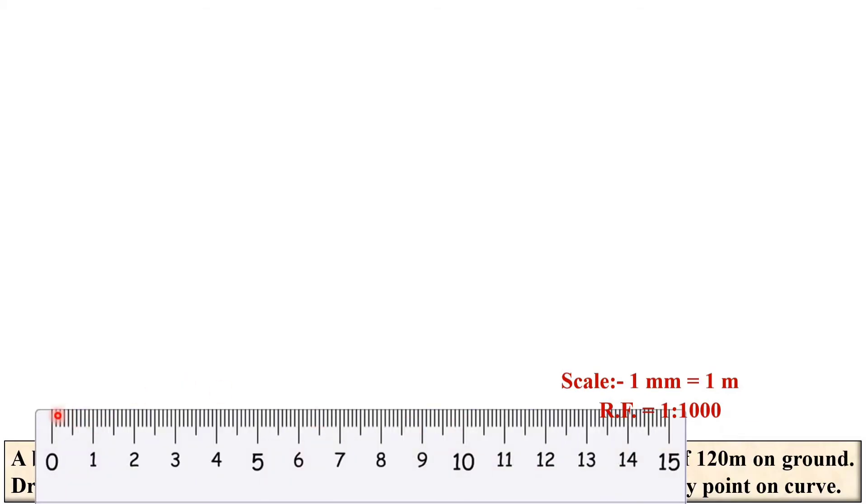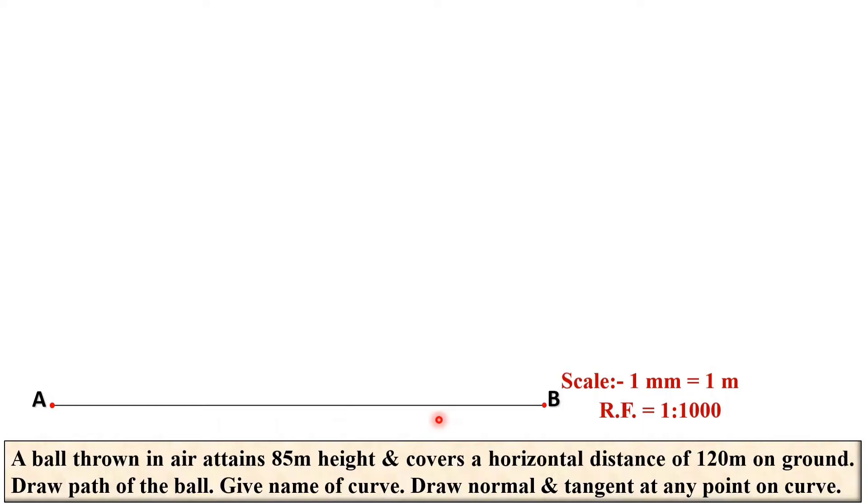First of all, draw the horizontal line that is exactly equal to 120 meter. Here you can say 0 to 120. Draw the horizontal line that is exactly equal to 120 mm because 1 meter represents as 1 mm in the drawing, so it will be 120 mm. Now give the name as AB. Now mark the midpoint of this AB line, give the name as 0.